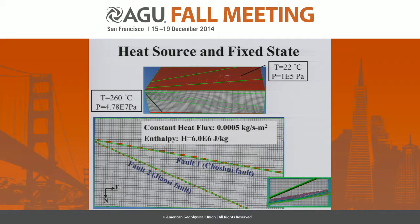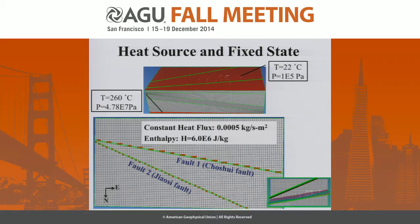These are the boundary settings in the model. We have temperature and pressure fixed at the top and the bottom. We also assume there is a constant heat flux. These are the parameters we use in the model.